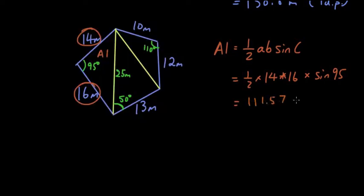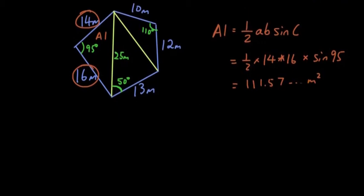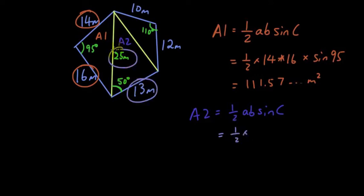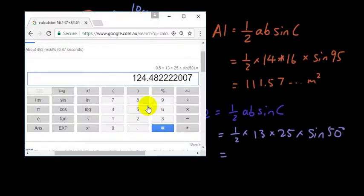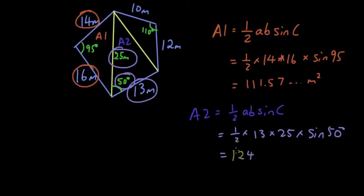Now technically, you're not supposed to round until you get the final answer. So let's just, you can keep writing out the numbers after that. So then, let's do area two. Area two is this area. Area two equals half AB sine C. And I use a lighter colour, half times. So this number can be A, this number can be B, 13 times 25 times sine C. C is the angle in between the two side lengths. Sine 50. Put that into your calculator. And the answer is 124.48 meters squared.